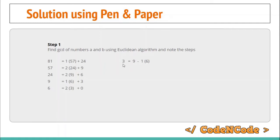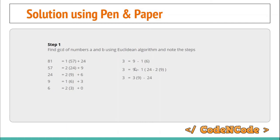We do this by repeatedly replacing the variables. From a previous step, 6 appears as a remainder, so we replace 6 with (24 - 2 × 9). Resolving this gives: 3 = 3 × 9 - 24. Now we have the equation in terms of 9 and 24, but still not in terms of a and b.